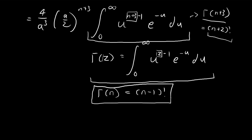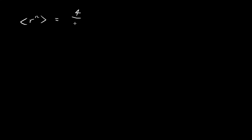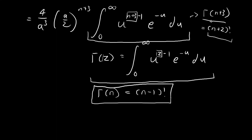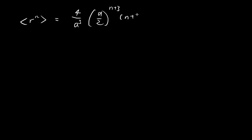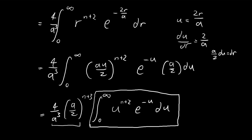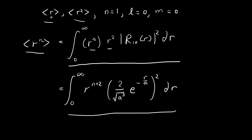We're essentially done. The expected value of r to the power of n is equal to 4 divided by a to the power of 3, times (a/2) to the power of n+3, times (n+2) factorial. Now that we have this formula, we are ready to evaluate the two expressions we're interested in: the expected value of r and the expected value of r squared.